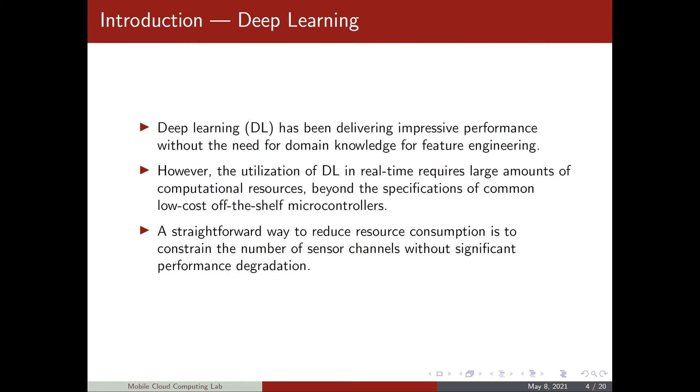So what methods are currently used to solve HAR? The state of the art in HAR consists of deep learning methods as they have been delivering impressive performance without a need for feature engineering. However, deep learning requires large amounts of computational resources, often beyond low-cost off-the-shelf microcontrollers. So the question is how do we reduce this computational resource consumption of deep learning? We can restrain the number of sensor channels because a lower number of sensor channels means a smaller input to the neural network and then a lower complexity.